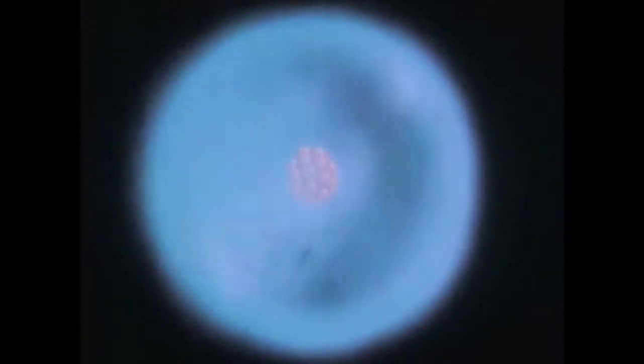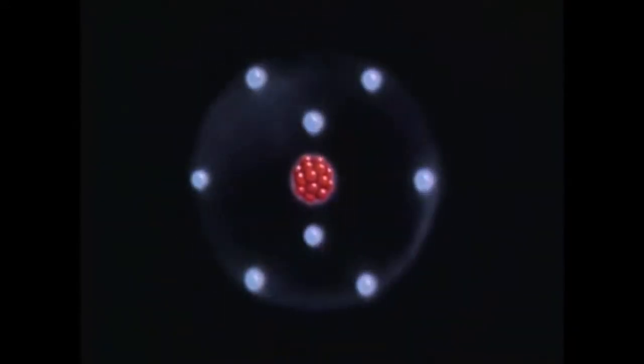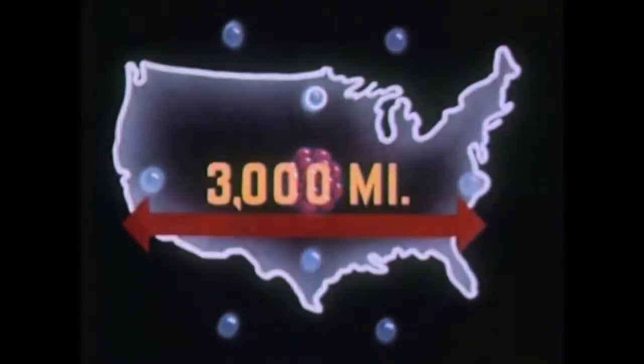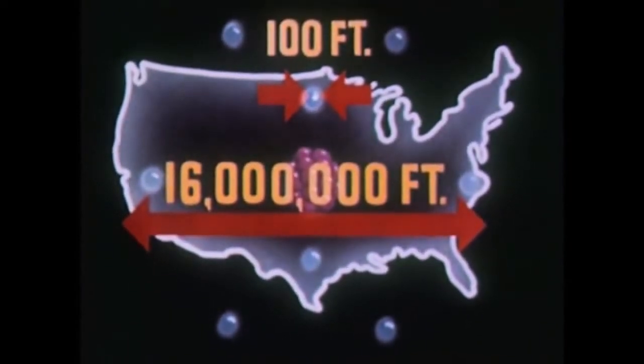No one has ever seen inside an atom. However, we think of it as a system of electrons circulating around a heavy nucleus at almost inconceivable speeds. To explain the principles concerned in this story, let's assume we can stop the action within the atom. This is a symbol representing the atom and not an attempt to show it as it actually is — it is impossible to show the correct relative proportions on screen. If an atom could be as large as the United States, one of its electrons would be only about 100 feet across. Therefore, to tell our story, we must resort to a symbol.